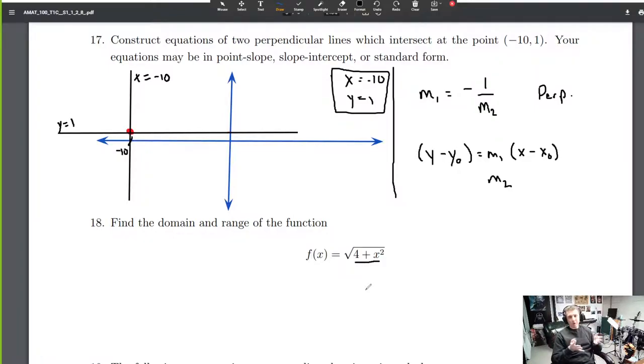The answer is no. We can plug in any real number because whenever we square it, we're going to get a positive number. And then when we add 4, we're going to get another more positive number. So the domain is all reals.